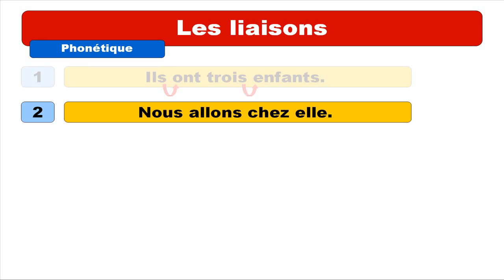Second sentence: nous allons chez elle. So let's see how it goes if we add liaisons. It's possible to do two liaisons — the first one between nous and allons, so you get nous allons, and then the second one between chez and elle, and you get chez elle. So let's read the whole sentence: nous allons chez elle. Repeat: nous allons chez elle.